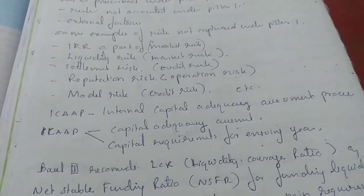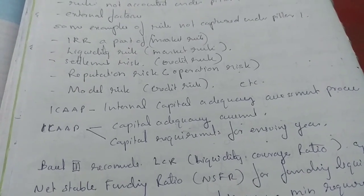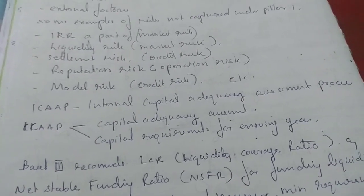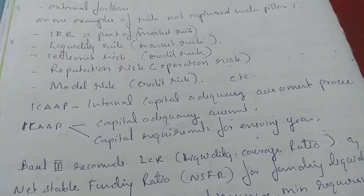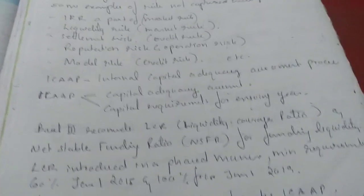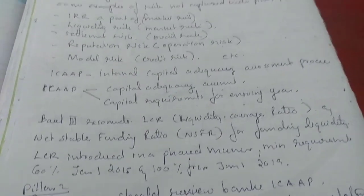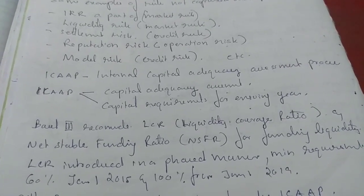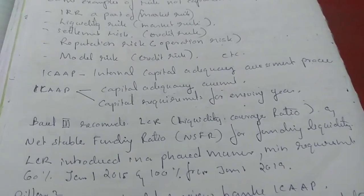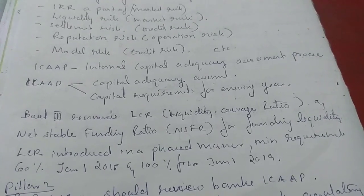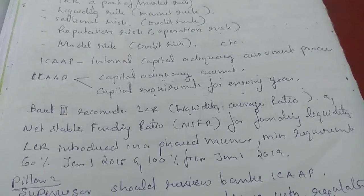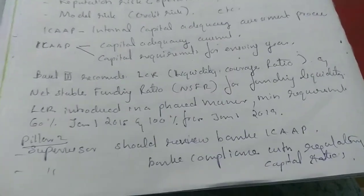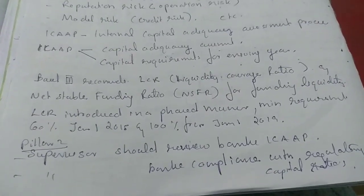In ICAP, two things are taken into account: capital adequacy assessment and capital requirements for the ensuing year. Basel 3 recommends LCR (Liquidity Coverage Ratio) and NSFR (Net Stable Funding Ratio) for funding liquidity. LCR was introduced in a phased manner — minimum requirement was 60% from January 1, 2015, and 100% from January 1, 2019.